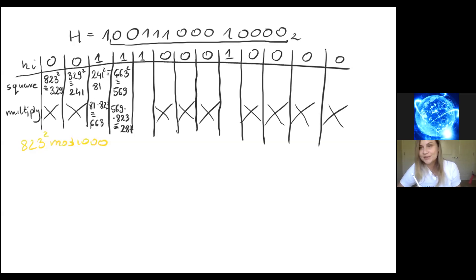So then we have 287 squared, that gives us 369. Then 369 times 823, that gives us 487.